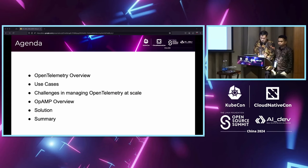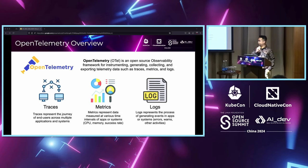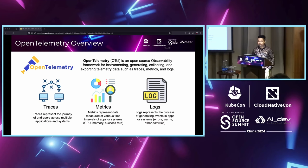We will start with the OpenTelemetry overview. OpenTelemetry is an open source observability framework for instrumenting, generating, collecting, and exporting telemetry data such as traces, metrics, and logs. I think you are already familiar with these three observability pillars: metrics, logs, and traces.